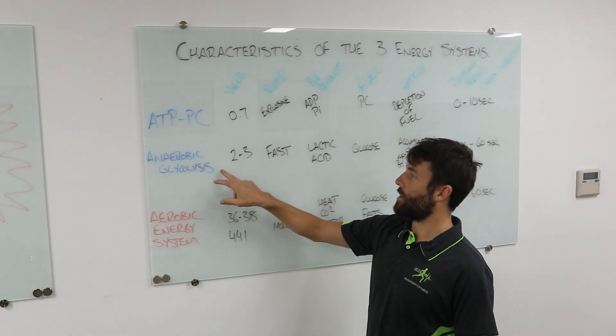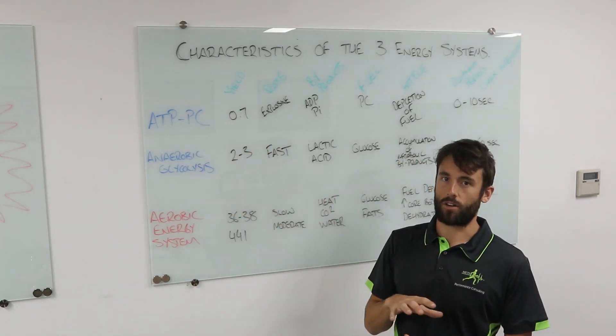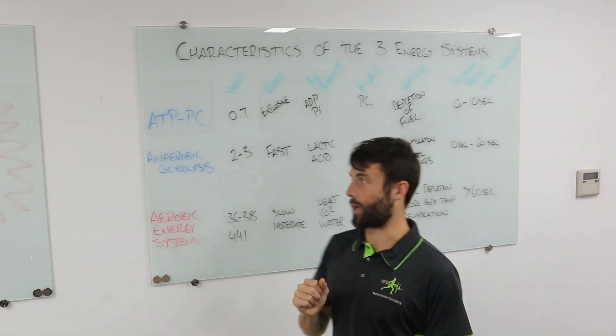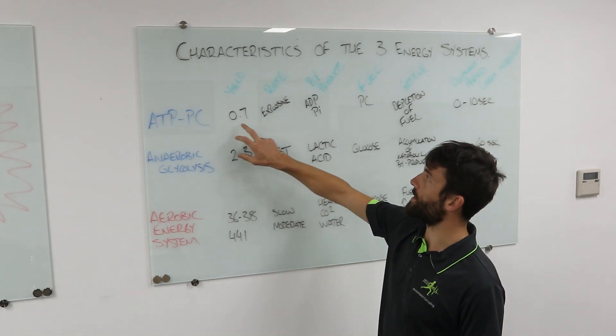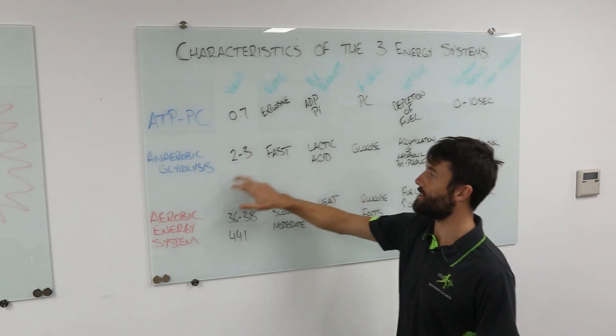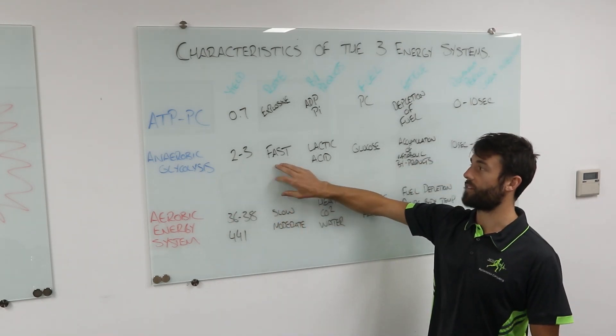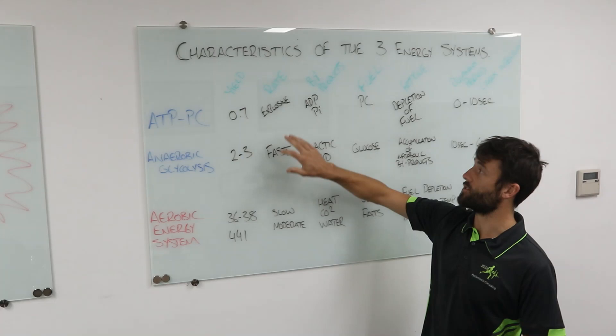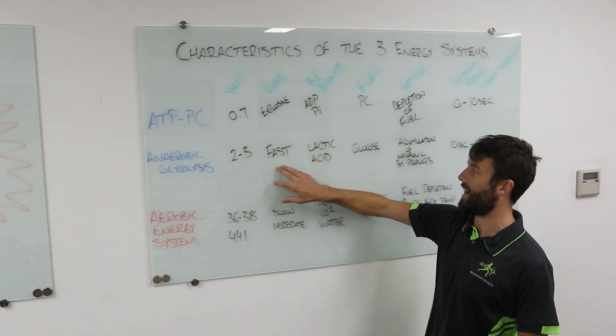Second energy system: anaerobic glycolysis. These first two are both anaerobic. They don't need oxygen. That's why they can provide energy really quickly. Anaerobic glycolysis. Yield is two to three, so it is significantly more. It's still not a lot, but it's two to three ATPs for each glycogen molecule that we break down. It can provide energy fast. It is still fast. It's not explosive, it's not rapid. We want to make sure we know that is faster, so explosive, that is fast.